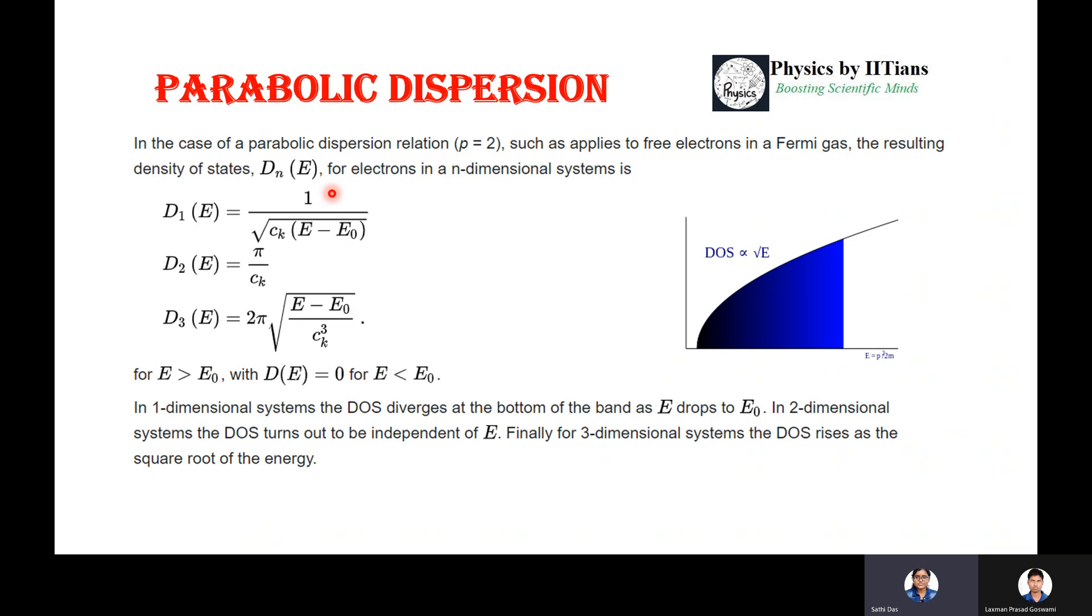The resulting density of states will vary with dimension. For one-dimensional systems, D₁(E) is directly proportional to 1/√E. For two-dimensional systems, density of states is independent of energy E. For three-dimensional states, density of states is directly proportional to √E. This figure shows the density of state variation for the three-dimensional case where DOS is directly proportional to √E.